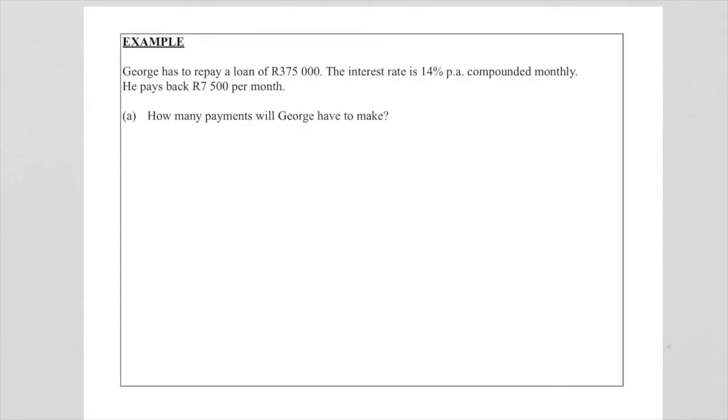In this problem Gregory has to repay a loan of R375,000. The interest rate is 14% per annum compounded monthly and he pays back 7500 rand per month. So first of all we need to calculate how many payments George has to make.